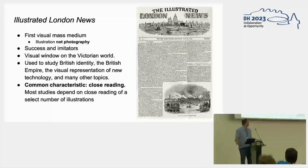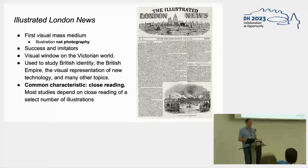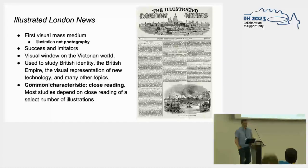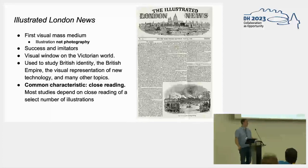It has been studied as a sort of a visual world — a window on the Victorian world — used to study British identity, the British Empire, the visual representation of all sorts of new technology, think of the railway or the sewage system of London, but also many other topics. A common characteristic of all these studies is that they rely on close reading of only a couple of images, so mostly 10 or maybe 50 images to say something about this illustrated world.